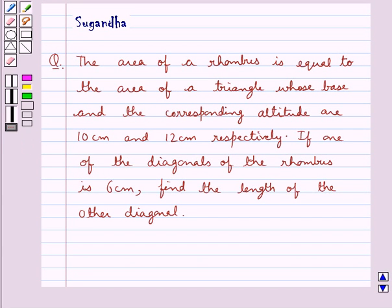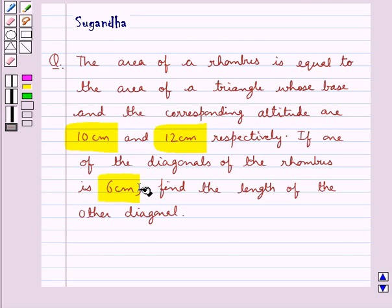Hello and welcome to the session. In this session we discuss the following question: the area of a rhombus is equal to the area of a triangle whose base and the corresponding altitude are 10 cm and 12 cm respectively. If one of the diagonals of the rhombus is 6 cm, find the length of the other diagonal.